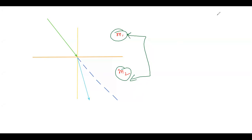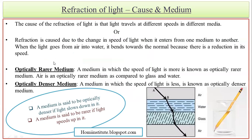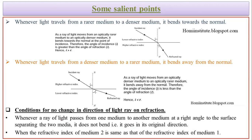So the basic reason behind refraction of light is: refraction is caused due to the bending of light, which occurs because of the change in the speed of light when it travels from one medium to another medium. When a light ray travels from one medium to another, it suffers a difference in speed, and because of that change in speed, the light ray gets bent — and this bending of the light ray is called refraction of light.